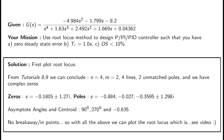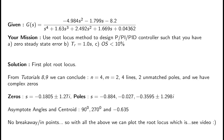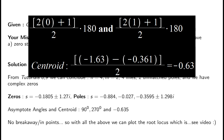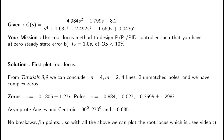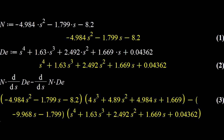Next, use the asymptote angle formula to obtain angles and the centroid. With n minus m equal to 2, q equals 0 and 1, giving you two asymptote angles. For the centroid, sum only the real parts of the poles and zeros — you get negative 0.6. There are also no breakaway or break-in points: using the formula from the last tutorial, when simplified, no valid values of s are found.